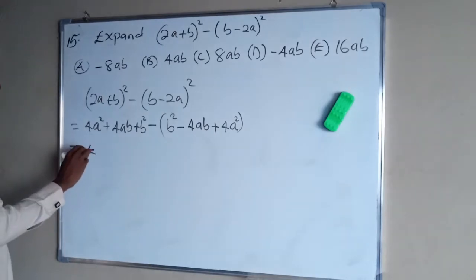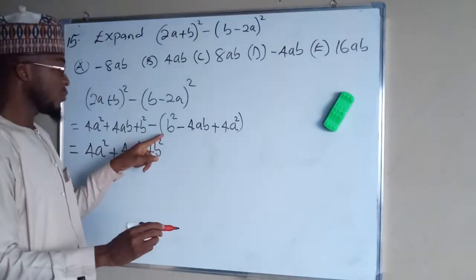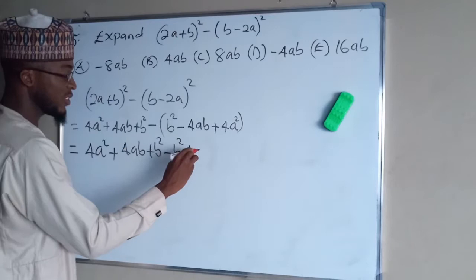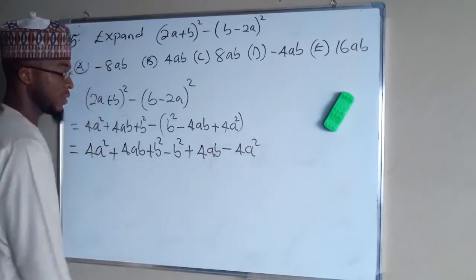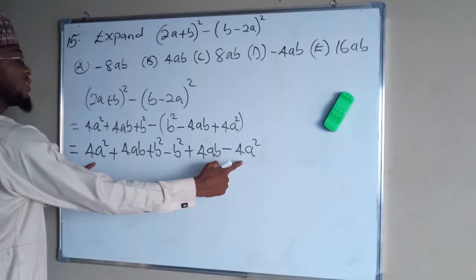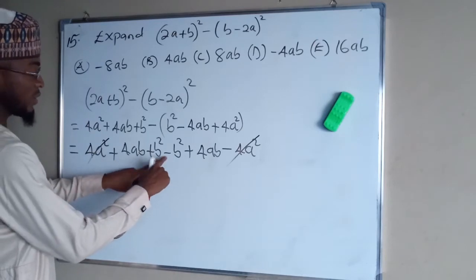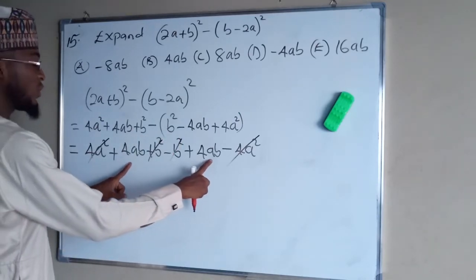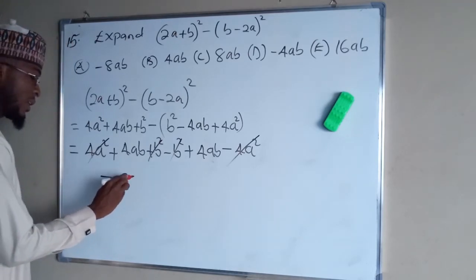Expanding the first bracket: 4a² + 4ab + b². The minus sign affects each term of the second bracket: minus b squared, then plus 4ab (because minus times minus is plus), then minus 4a squared. Collecting like terms: the 4a² and negative 4a² cancel out, the b² and negative b² cancel out. We are left with 4ab plus 4ab, making 8ab.